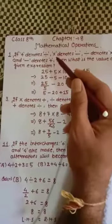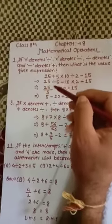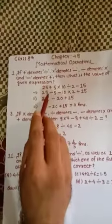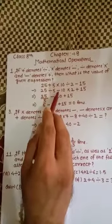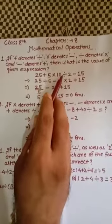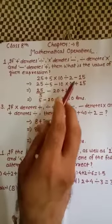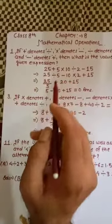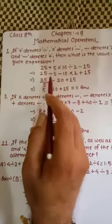First, we have to replace the given symbols with the given information. Plus should be replaced with divide, so we replace it. Multiply should be replaced with minus — replaced again. In the same manner, divide will be replaced by multiply, and minus will be replaced by plus. Now it becomes a mathematical expression which we have to solve.